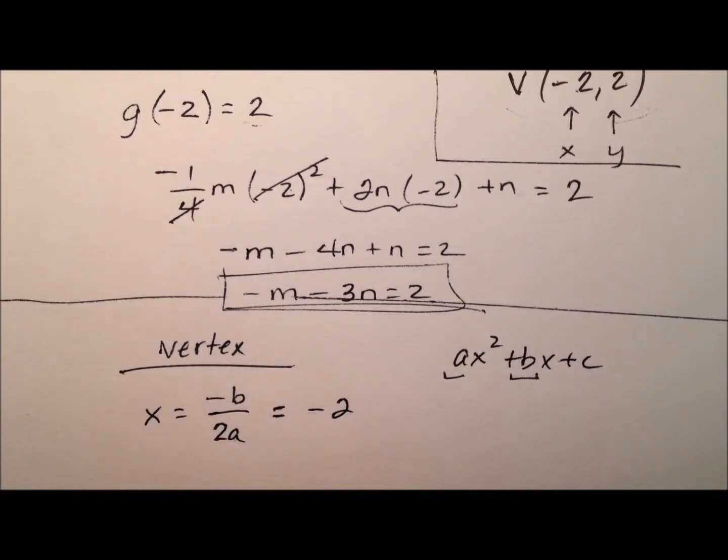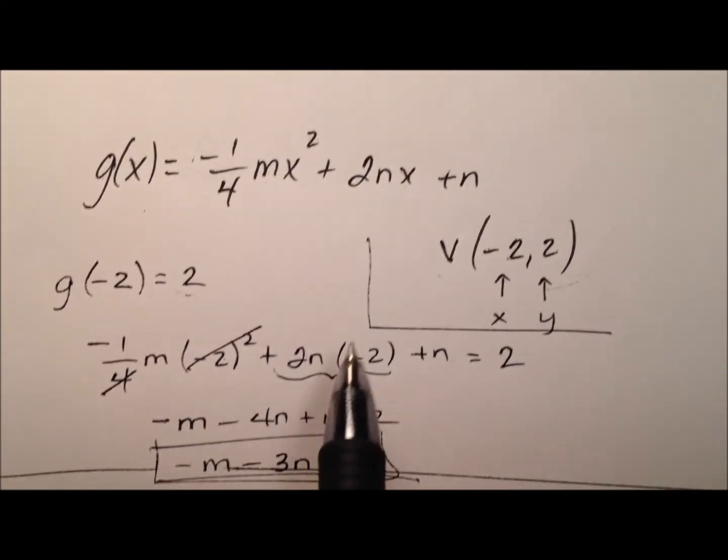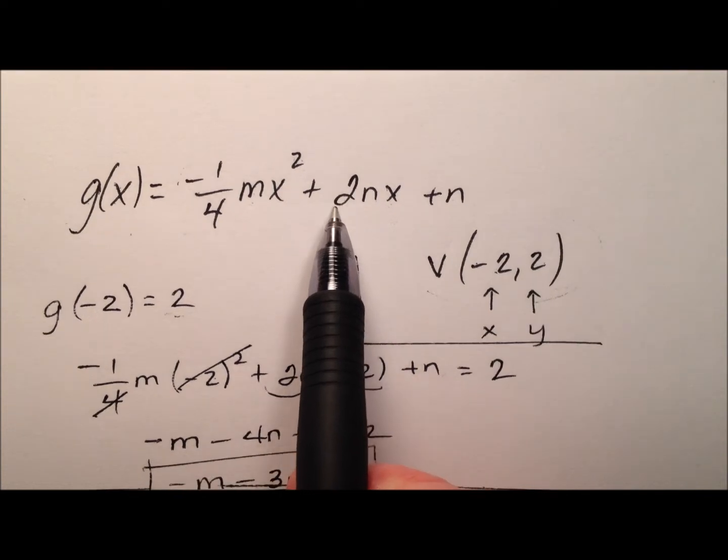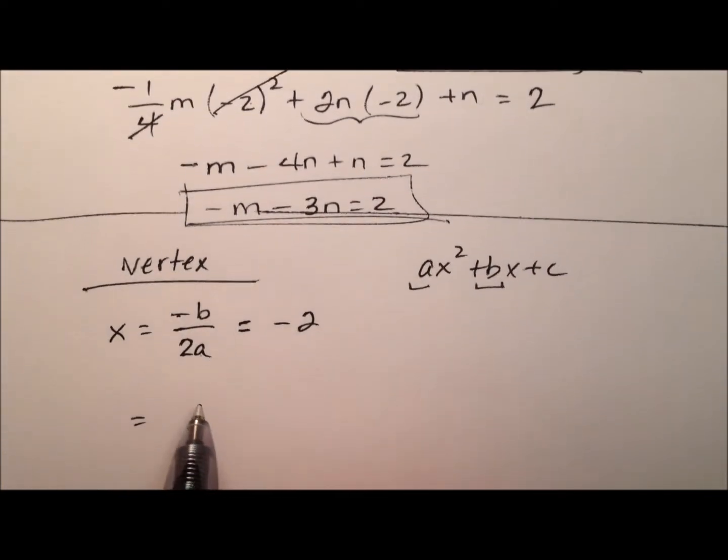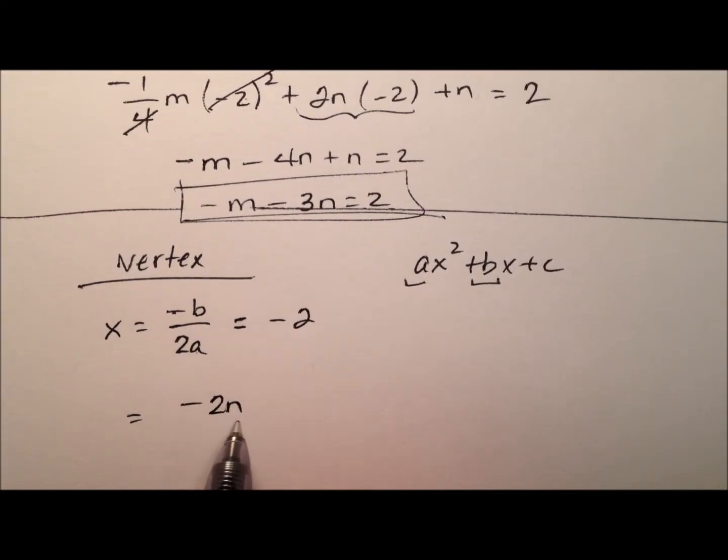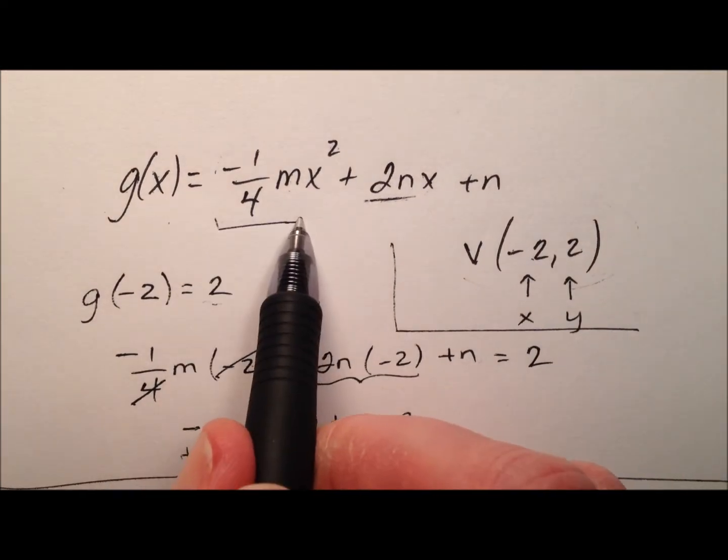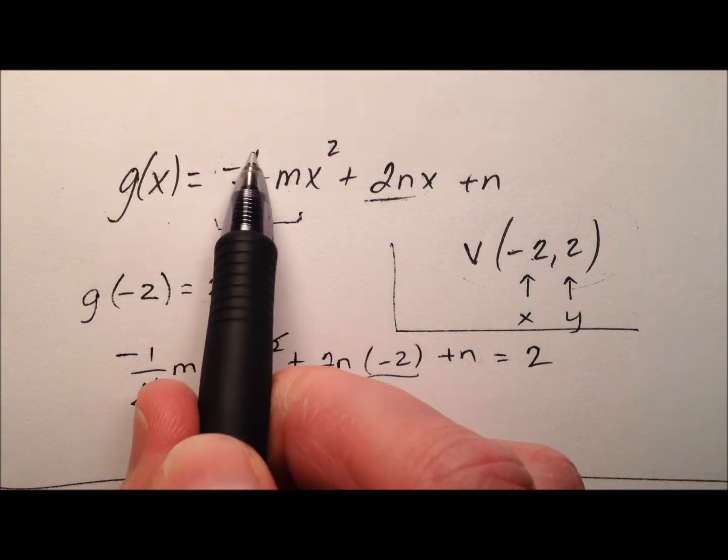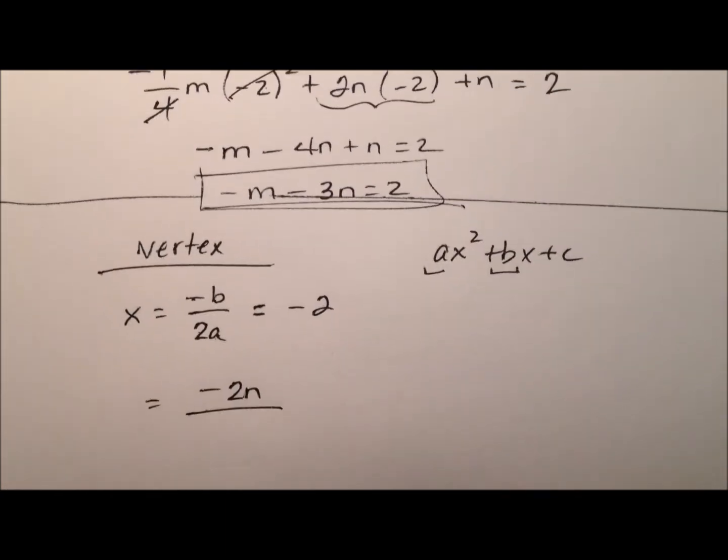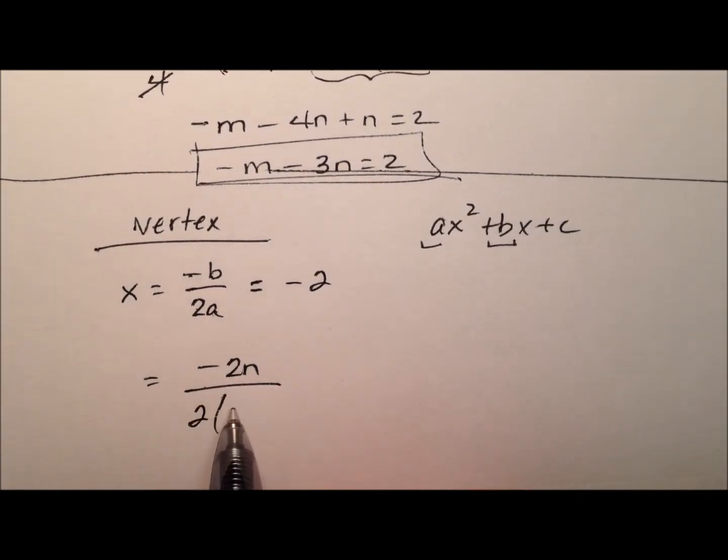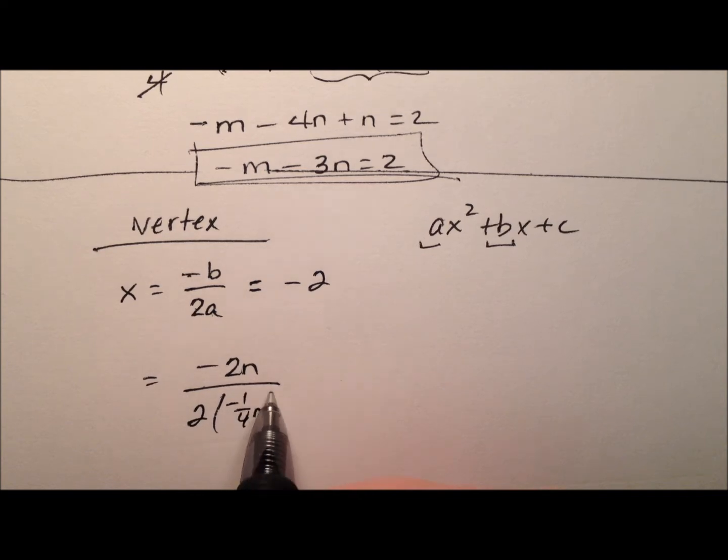Well, let's go ahead and plug in everything I know. So, the opposite of b. So, my b value is 2n. So, it will be the opposite of 2n over 2 times a. Well, my a value is this leading coefficient which looks like negative 1 fourth m. So, it's going to be 2 times negative 1 fourth m.